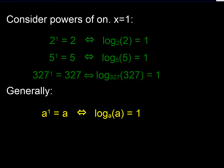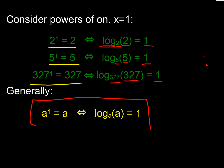The second special case: powers of one. 2 to the power 1 is 2, 5 to the power 1 is 5, and 327 to the power 1 is 327. In log form: log base 2 of 2 equals 1, log base 5 of 5 is 1, log base 327 of 327 is 1. Generally: a to the power 1 equals a, therefore log to the base a of a is always 1.